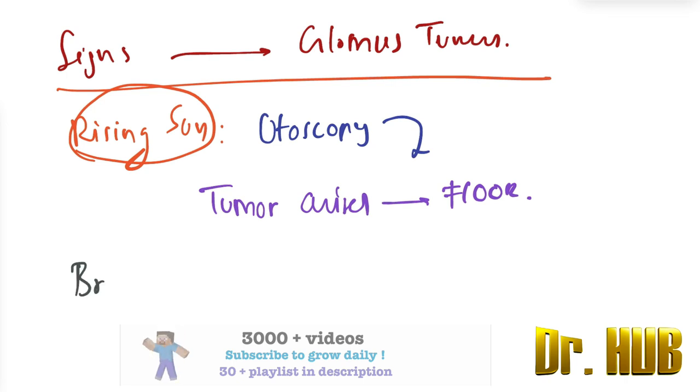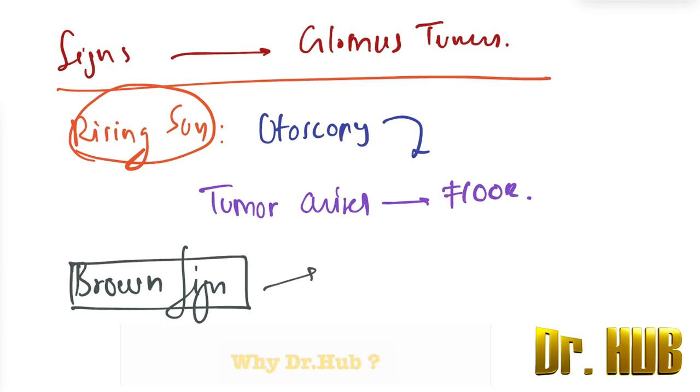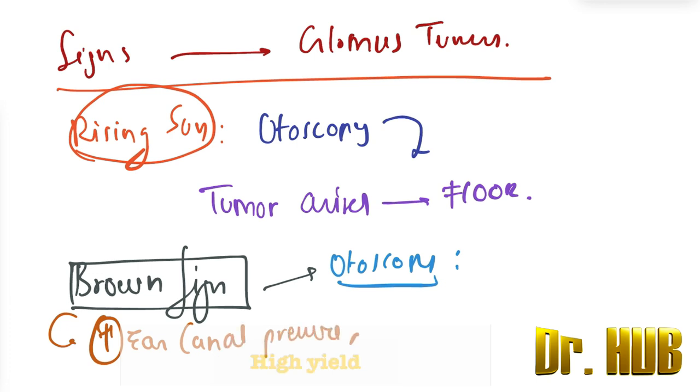Next will be the Brown sign. So this Brown sign is again seen in terms of otoscopy, and what is seen here is an increase in the ear canal pressure. The tumor pulsates and then blanches.